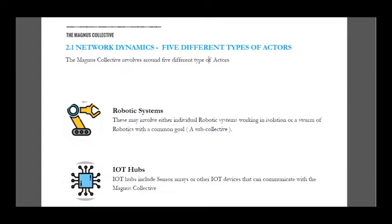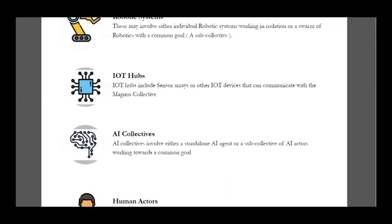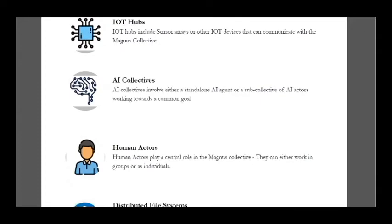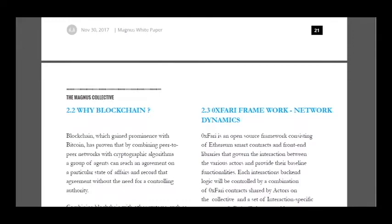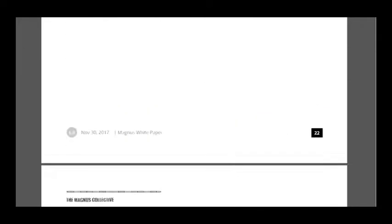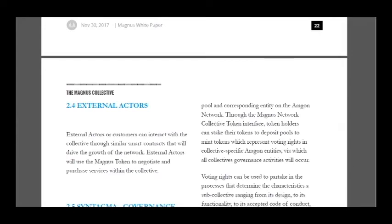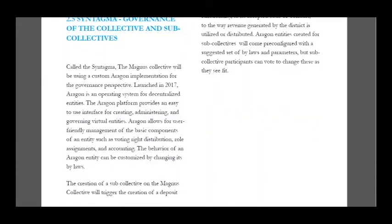IoT hubs include sense arrays or devices that can communicate with the Magnus collective. All collectives involve either a standalone AI agent or a sub-collective of AI actors working towards a common goal. There are also human actors and distributed file systems. Blockchain is used because it is the most popular and effective system, enabling many smart contracts and future platforms.